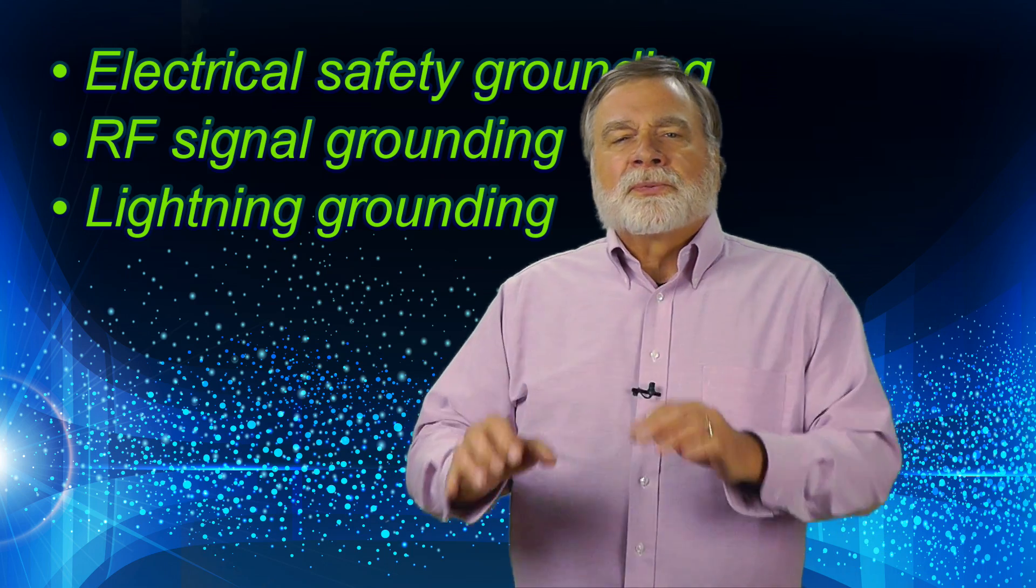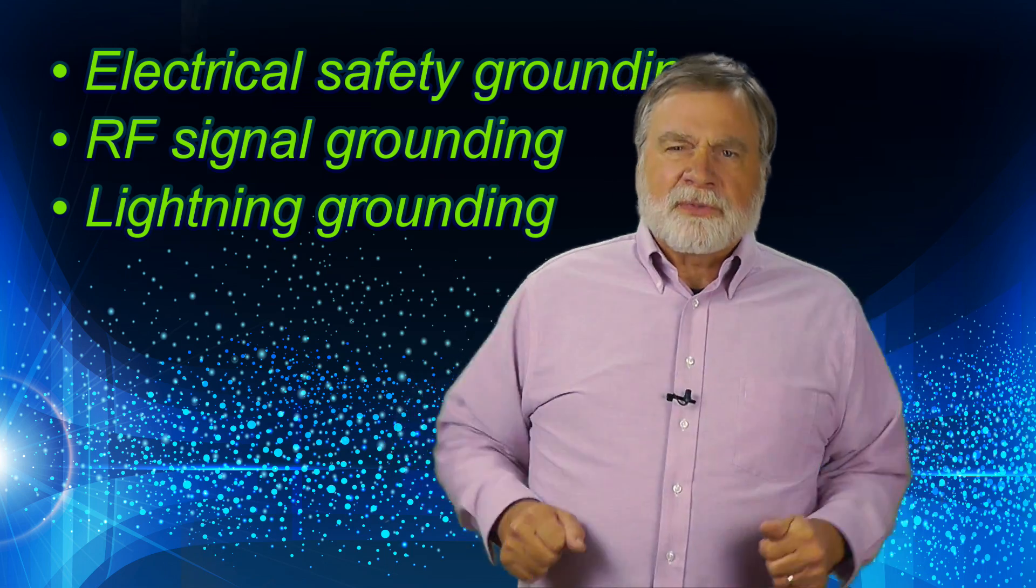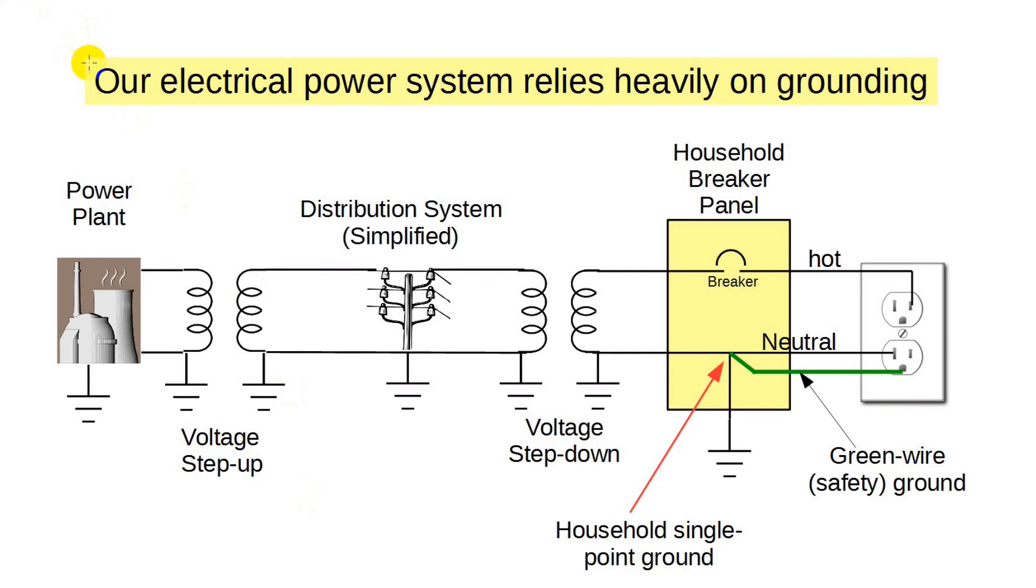Let's look first at electrical utility safety grounding. This simplified chart shows how our electrical system relies on grounding at multiple points. The power plants are grounded. The voltage is stepped up for transmission and travels sometimes great distances to the local distribution point. From here two wires go forth and one is called the neutral and is held at ground potential.